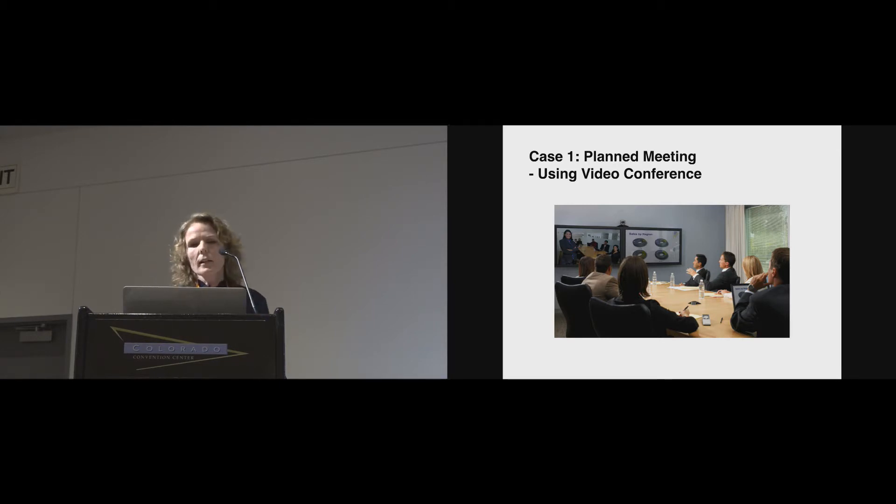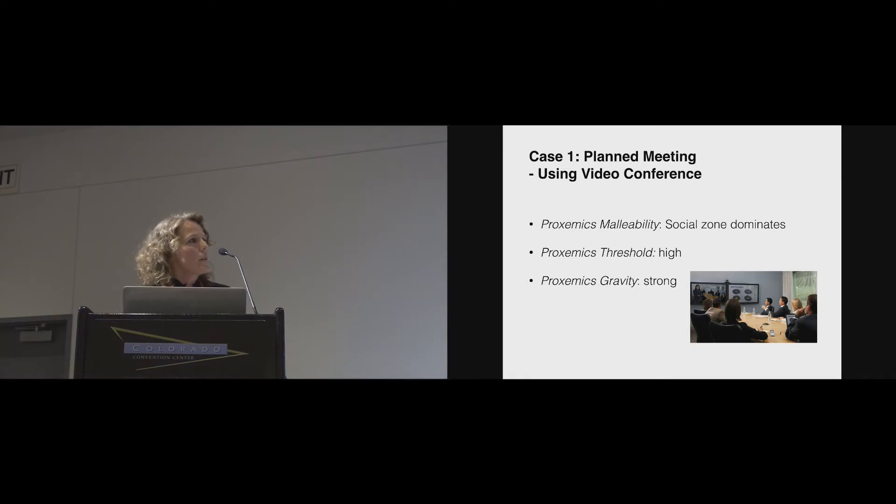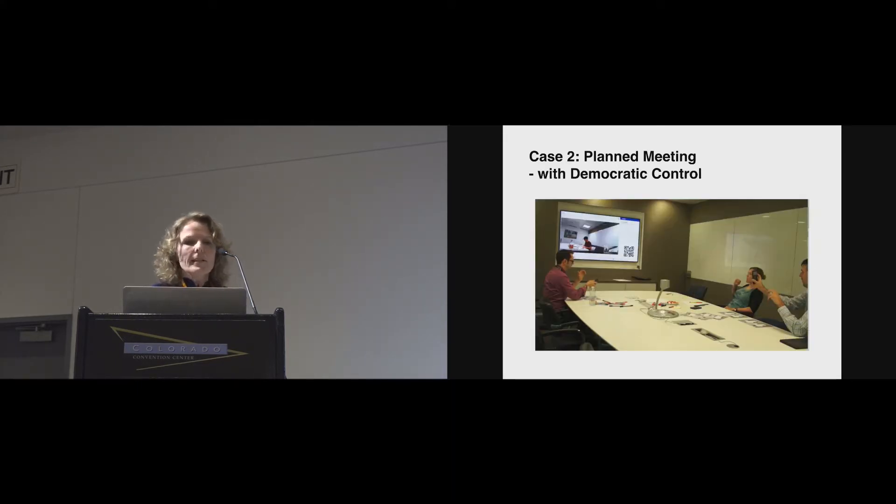So, the cases that we studied in articulating these concepts is first the planned meeting using video conference that we all know. So, here we have the screen size influence, how people configure themselves in this room. The camera space also determines how people would set the furniture, the size of the table. And particularly, you can see that in the setup, co-located people need to place themselves with a certain distance for them to be visible at the other end. And when we look at these proxemics concepts, we see how this encourages a rather fixed situation. So, the social zone dominates very much the situation. The threshold, the cost to change the situation, for instance, walk up and point to some contents on the screen. It's rather high because you really break out of the situation. So, it must be really critical what you have to say. And also, the gravity tends to to center around this specific situation.